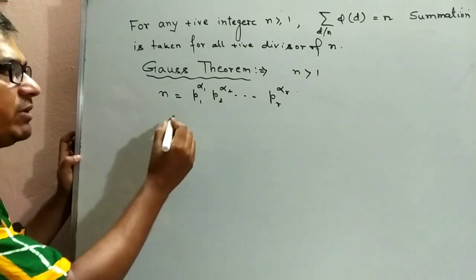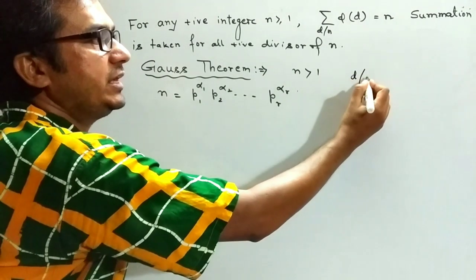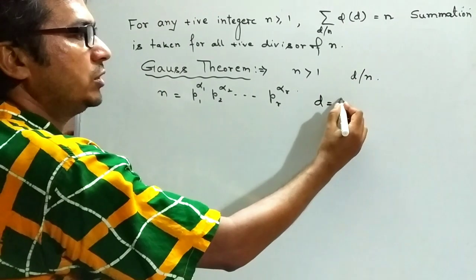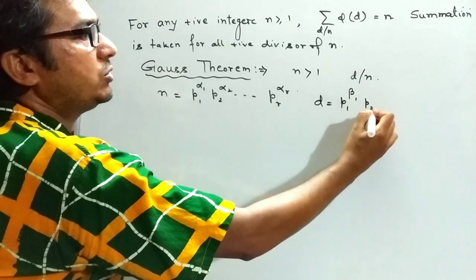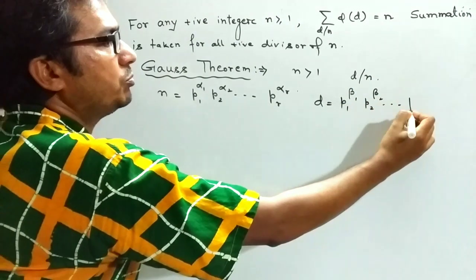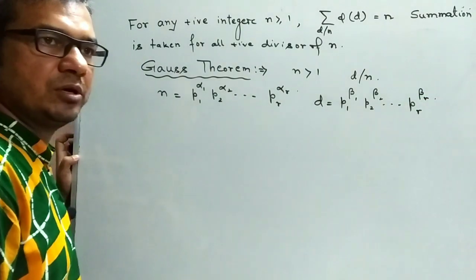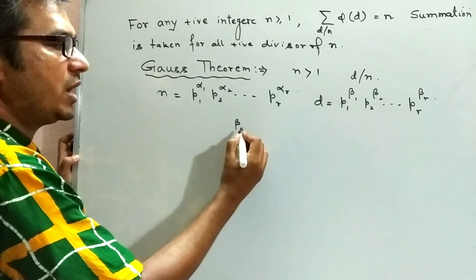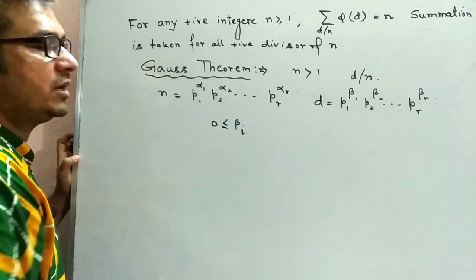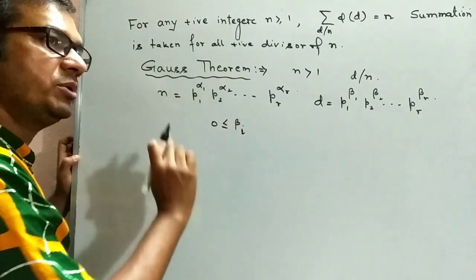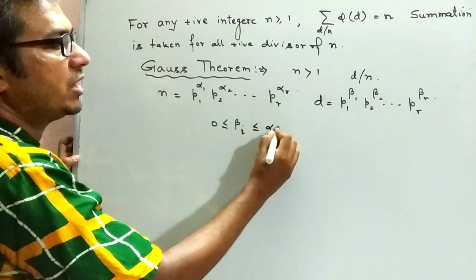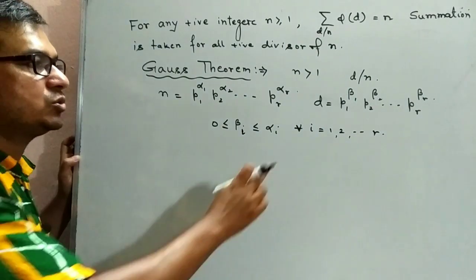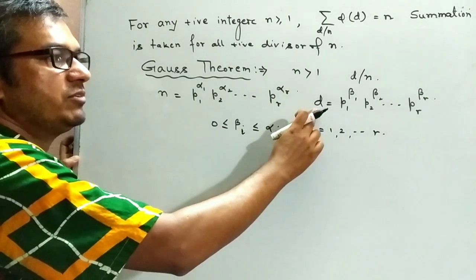Then any divisor d of n is of the form d = p1^beta1 · p2^beta2 · … · pr^betar. Obviously the range of beta1, beta2, …, betar is given by 0 ≤ beta_i ≤ alpha_i for all i = 1, 2, …, r. So any positive divisor can be written in this form.